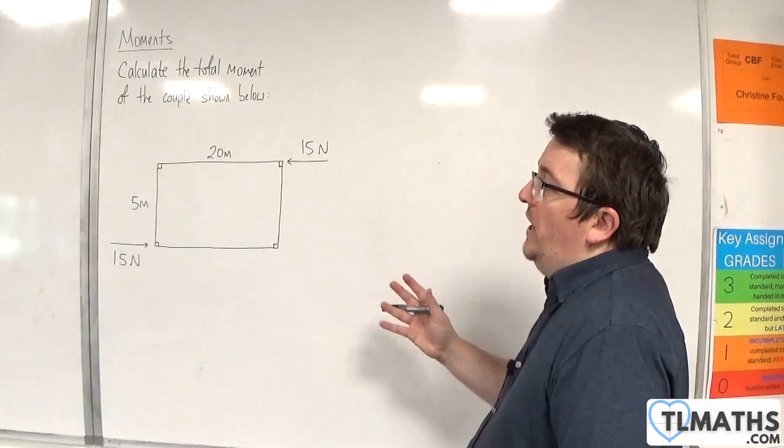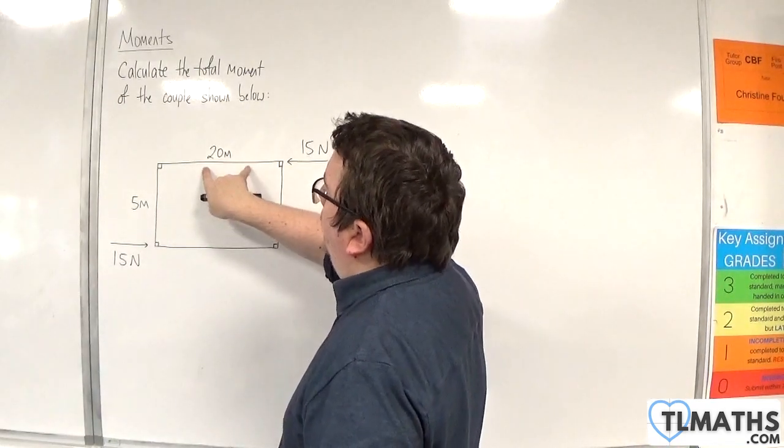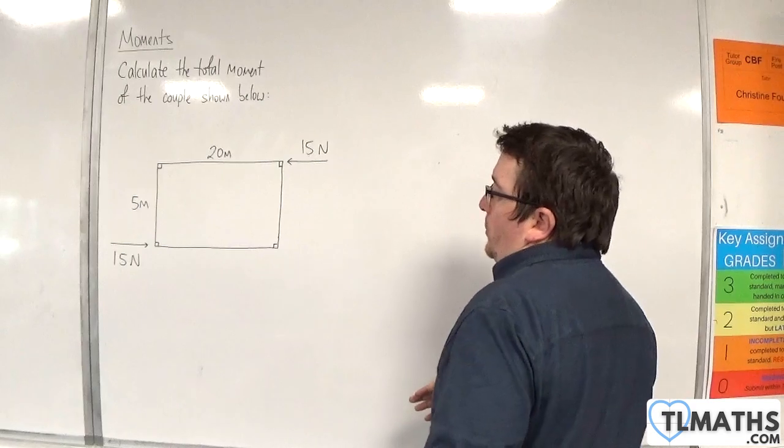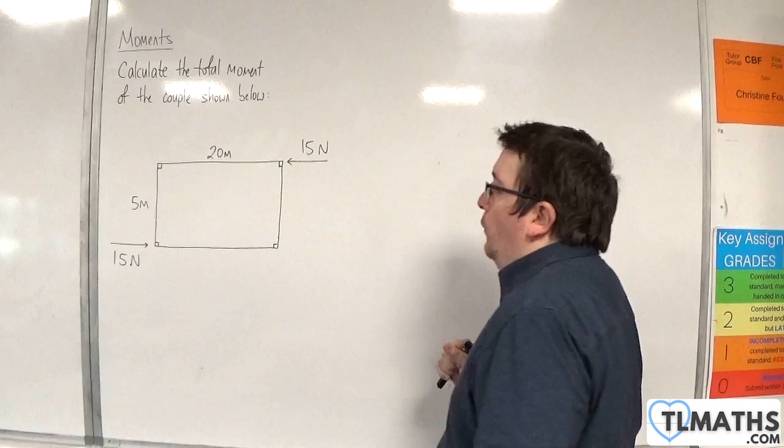So in this video we have a rectangular laminar, which is 5 meters by 20 meters, and there are two forces being applied to it. 50 newtons in that direction, 50 newtons in that direction, and at those points.